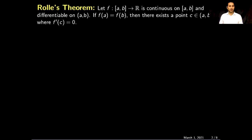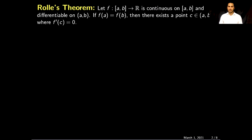The statement of Rolle's Theorem is: if we have a function which is continuous on the closed interval [a, b] and is differentiable on the open interval (a, b), and it also satisfies that the value of the function at a is equal to the value of the function at b — that is, at the endpoints the function has the same value — then there will exist a point c belonging to the open interval (a, b) such that the derivative of the function at that point is equal to zero.